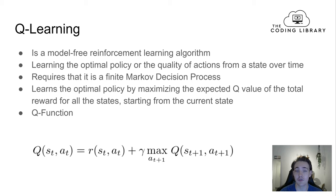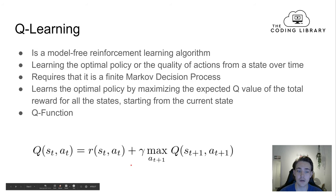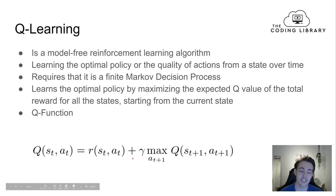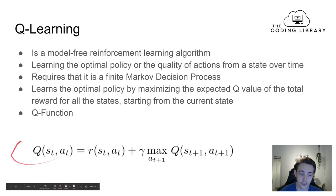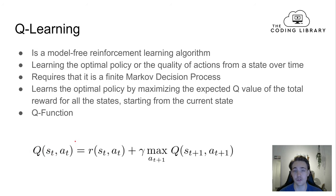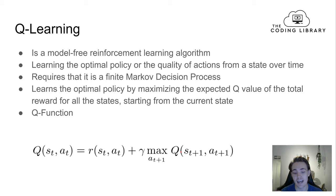Q-learning learns the optimal policy by maximizing the expected Q-value of total reward for all states starting from the current state. The Q-value for a given state-action pair equals the reward for that state and action, plus the maximum rewards for all other state-action pairs from the next state, scaled by a gamma factor. This gamma factor controls how much future rewards impact the current Q-value.